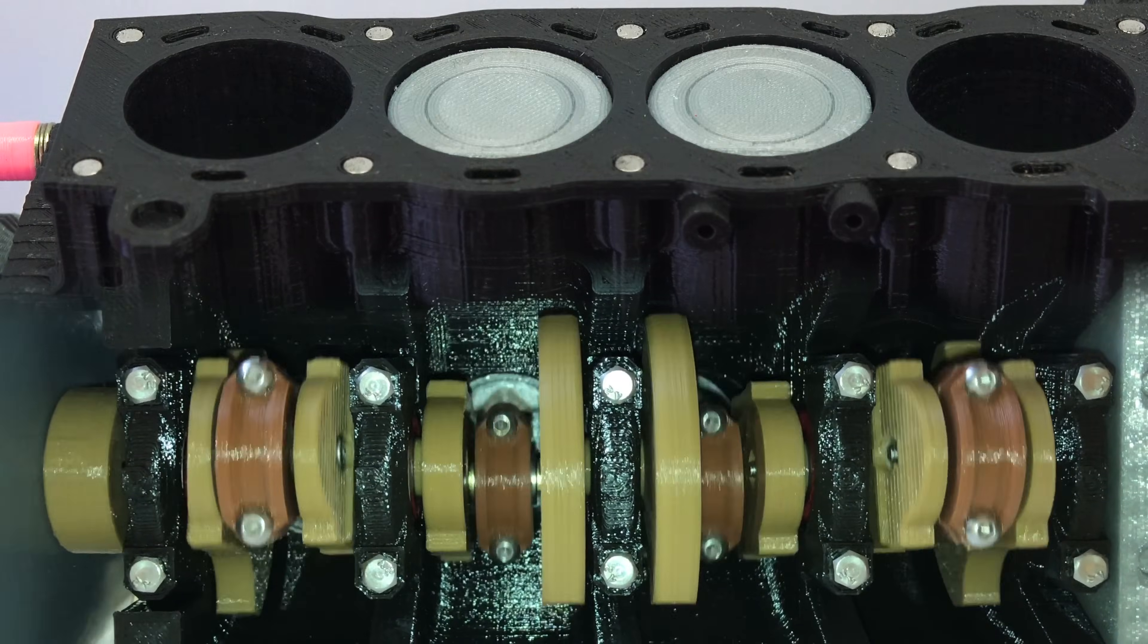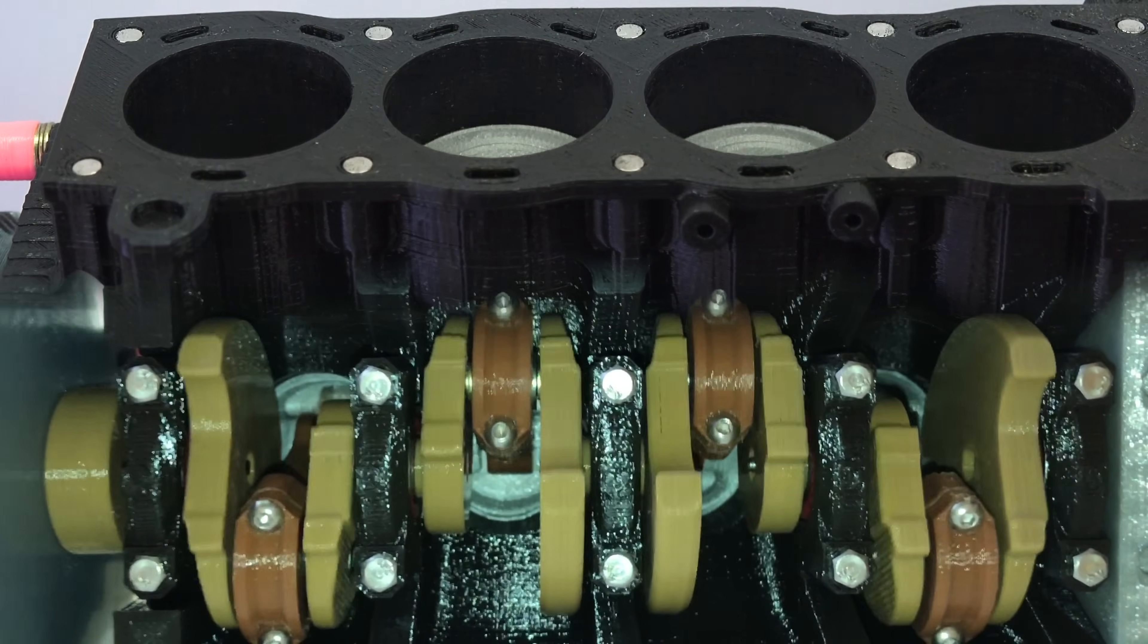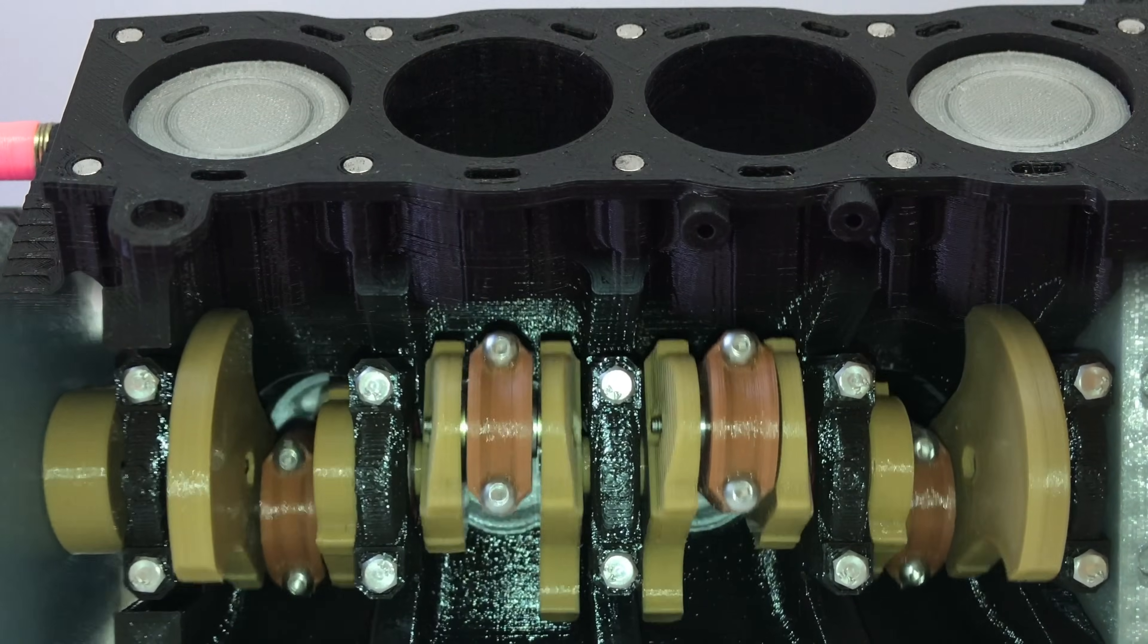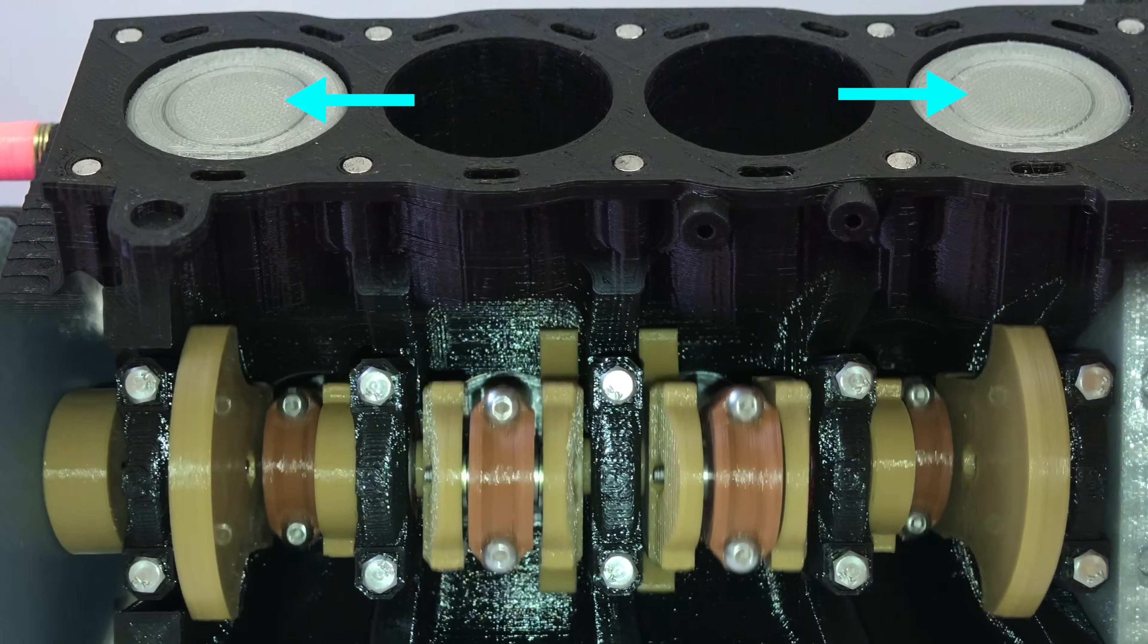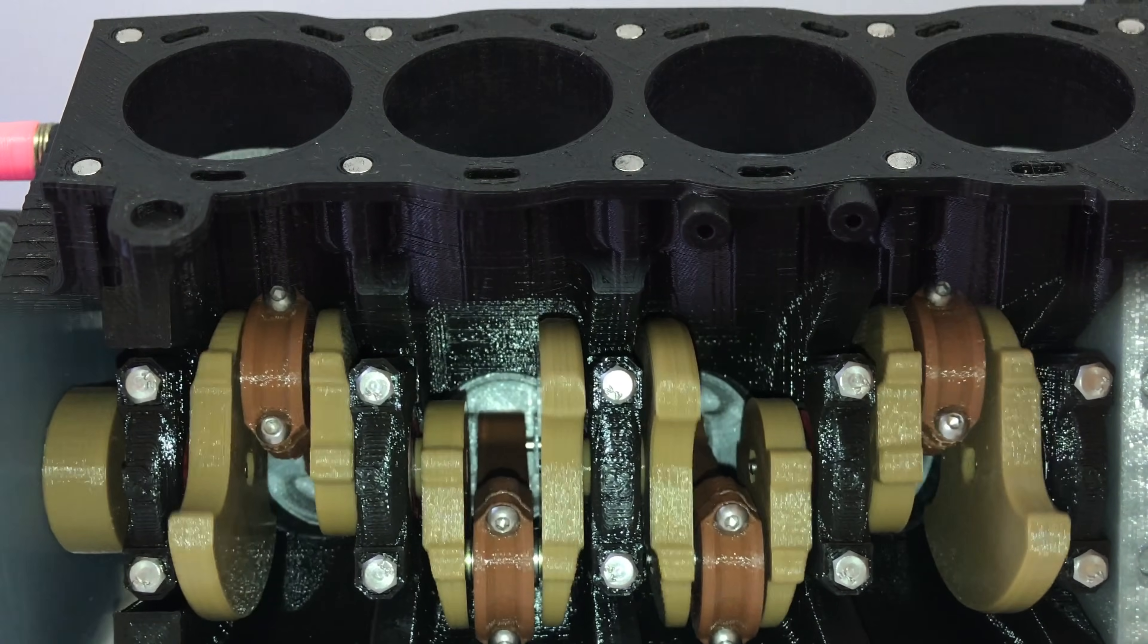One of the interesting things about inline four cylinders is why the pairs of cylinders move in the way that they do, with the inner two pistons moving up and down together as well as the outer two pistons moving up and down opposite the inner cylinders.